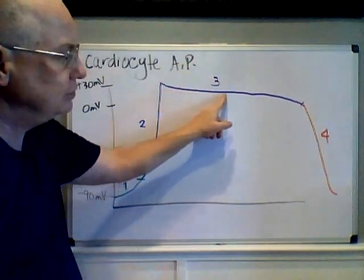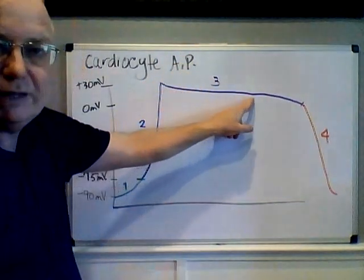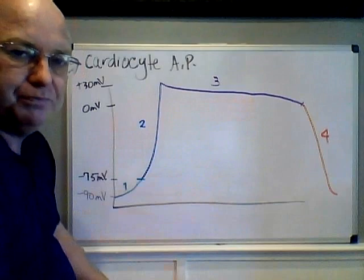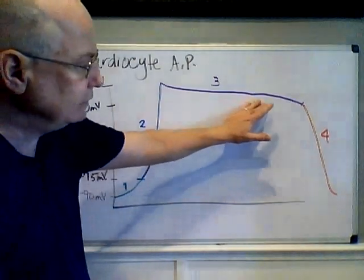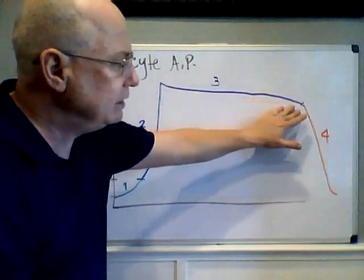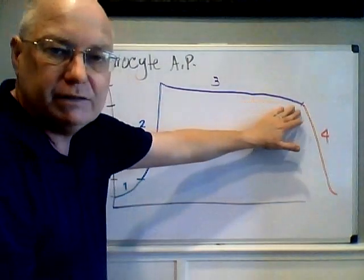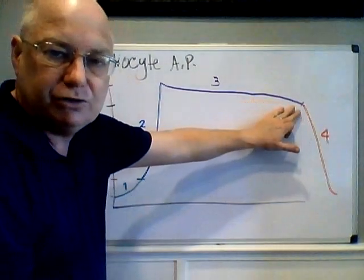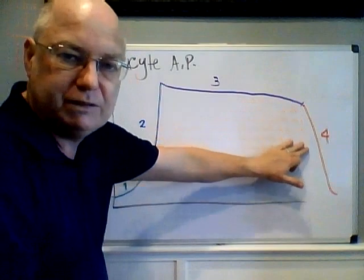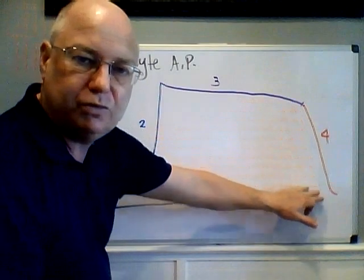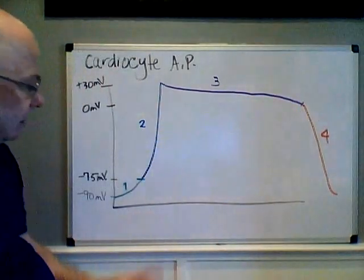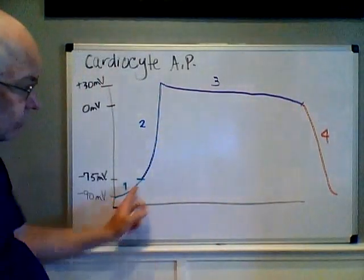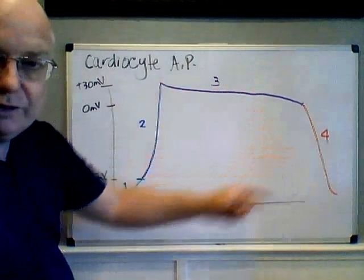The plateau stage continues for an extended period of time. By the time the calcium channels close, the potassium channels — which remain open — return the cell to threshold, and then the whole thing starts over again.